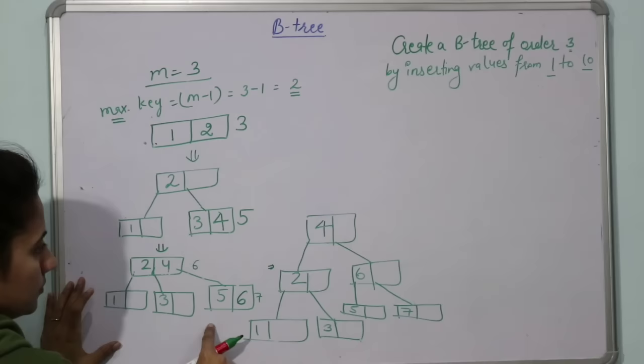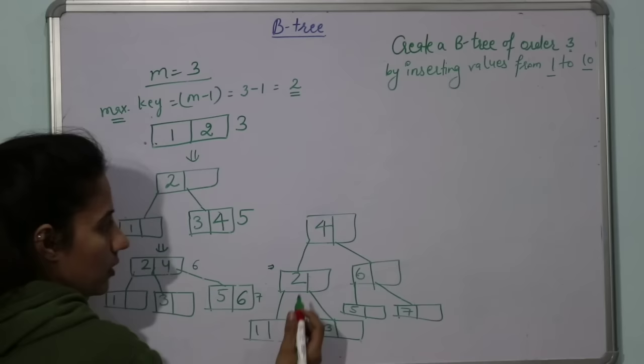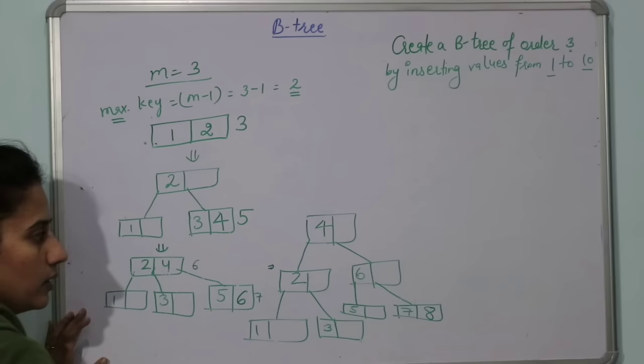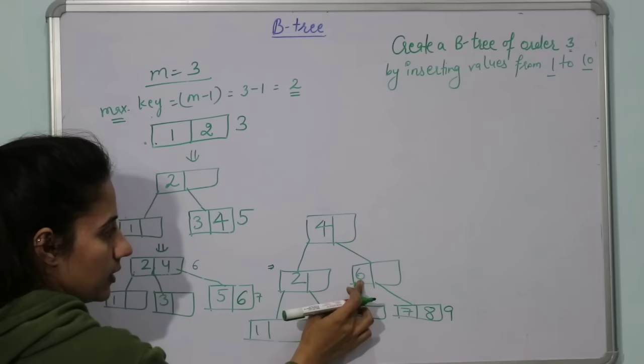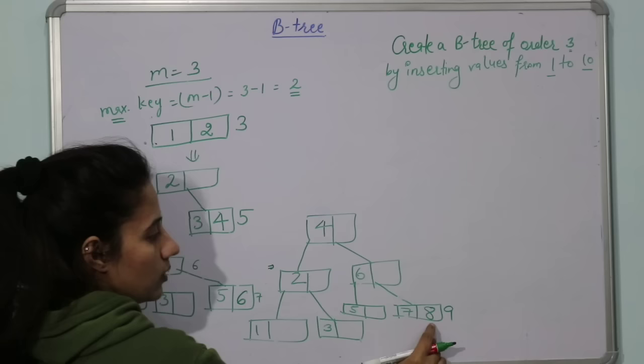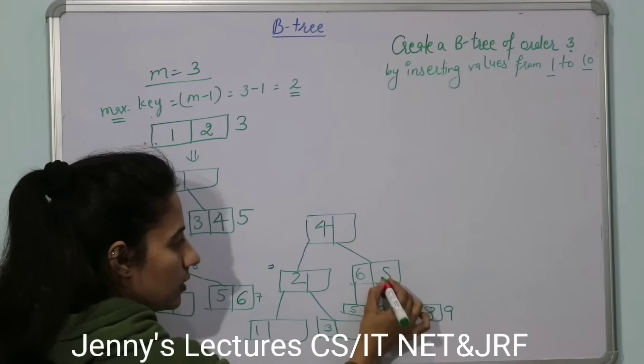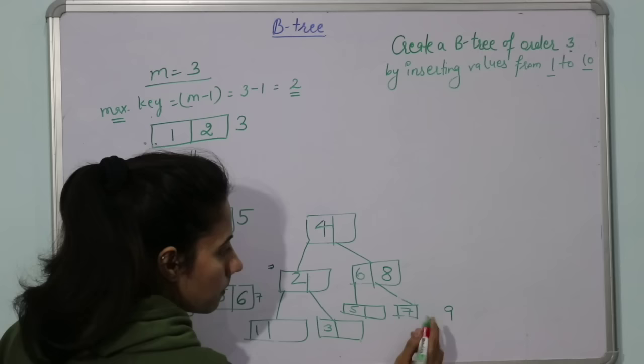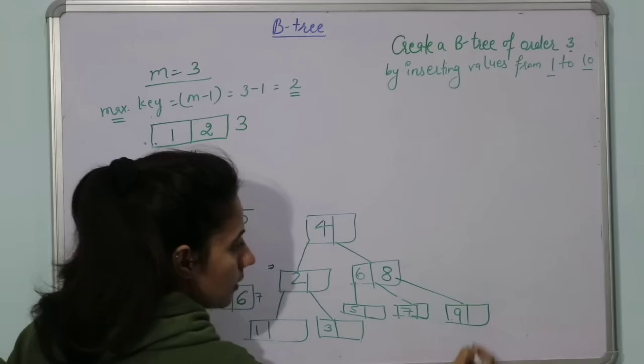Now we have to insert 8. 8 will be inserted: greater than 4, greater than 6, but it is not a leaf node. So we go down, and 8 is inserted here. Next is 9. 9 is greater than 4, greater than 6, and it would be inserted in the leaf node. So 8, 9. But overflow condition has come here. Splitting will happen: 8 will go up here. 8's left part would be 7, and 8's right part would be 9.